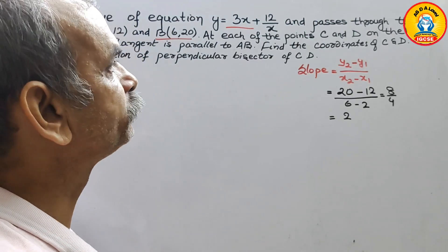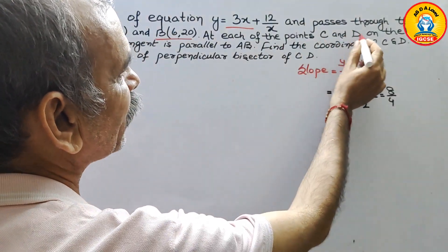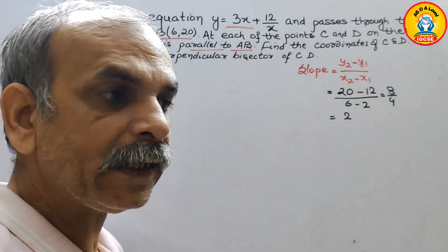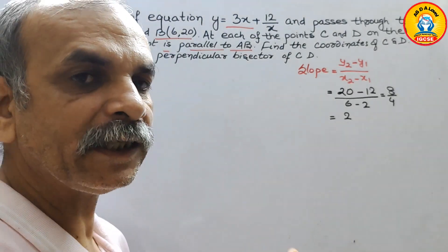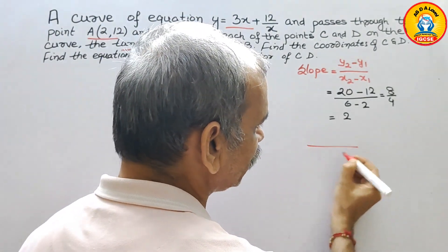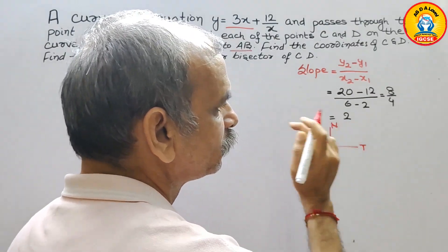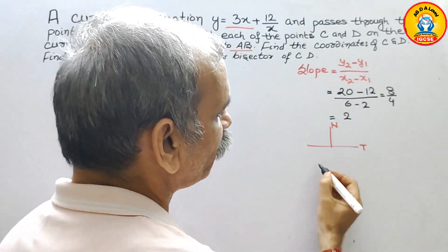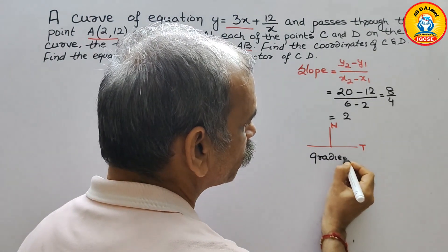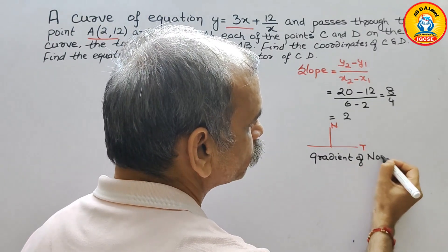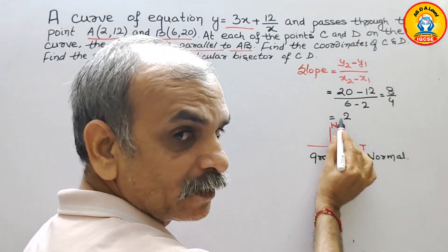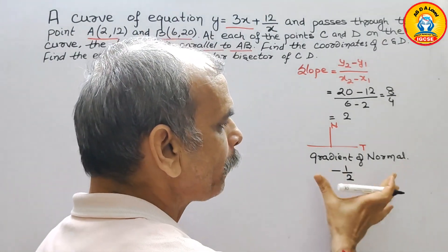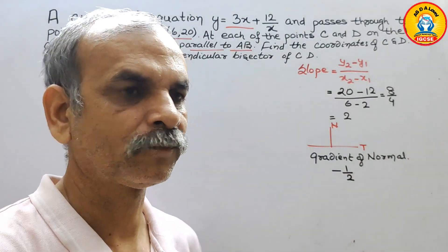Now, they have told us that at points C and D on the curve, the tangent is parallel to AB. That means the gradient of the tangent is 2. Now we will find out the gradient of the normal, which is the negative reciprocal: minus 1 by 2. So the normal slope is -1/2 and the tangent slope is 2.